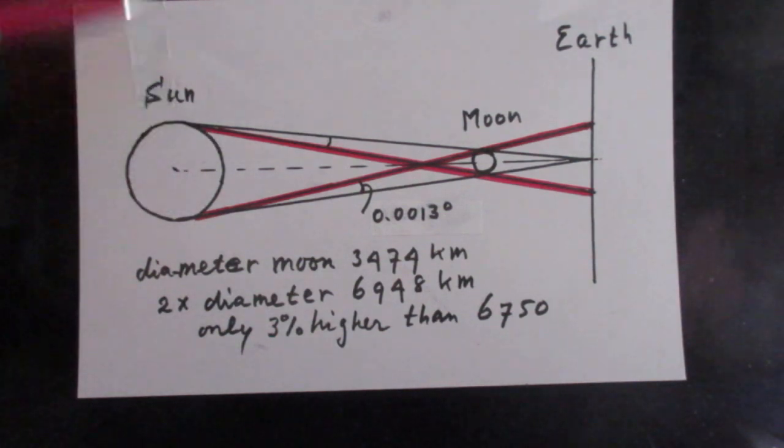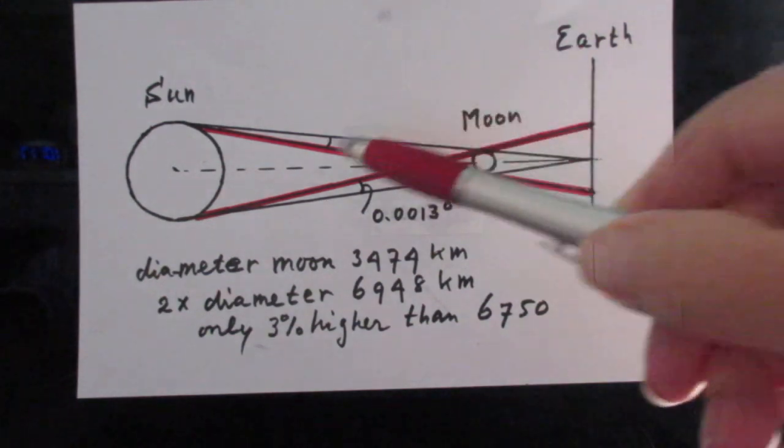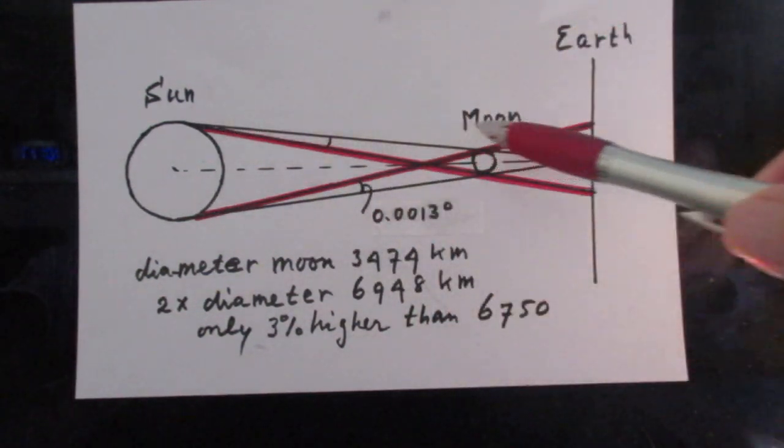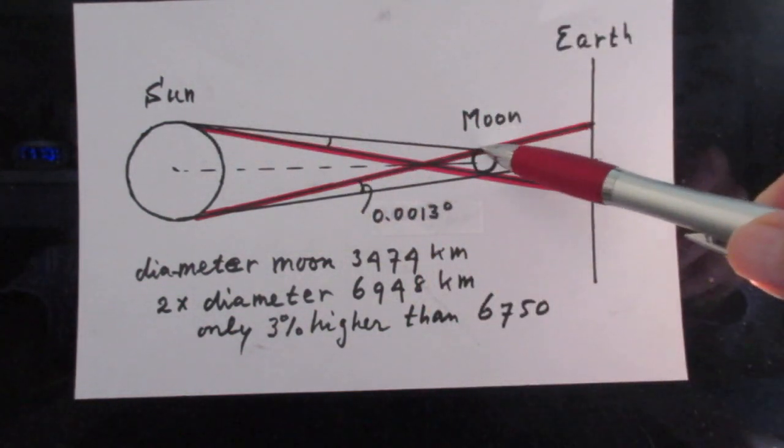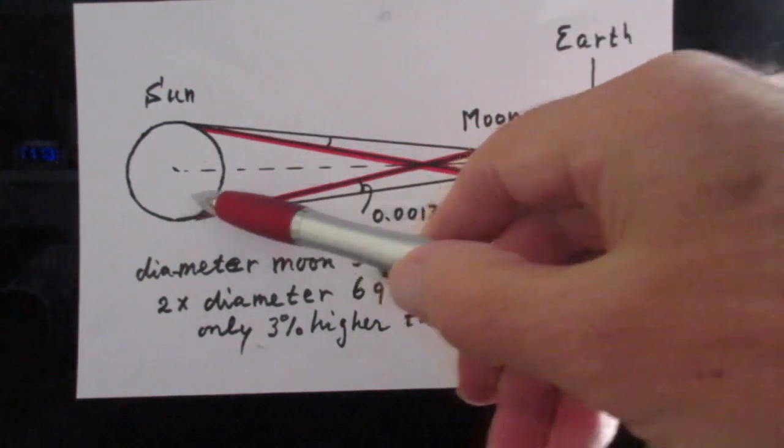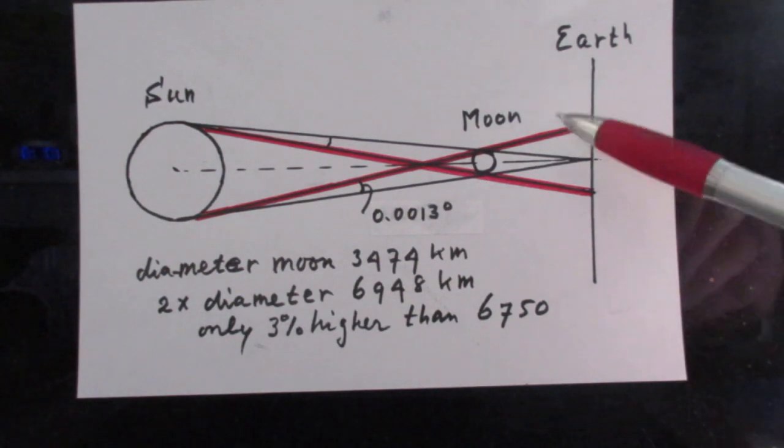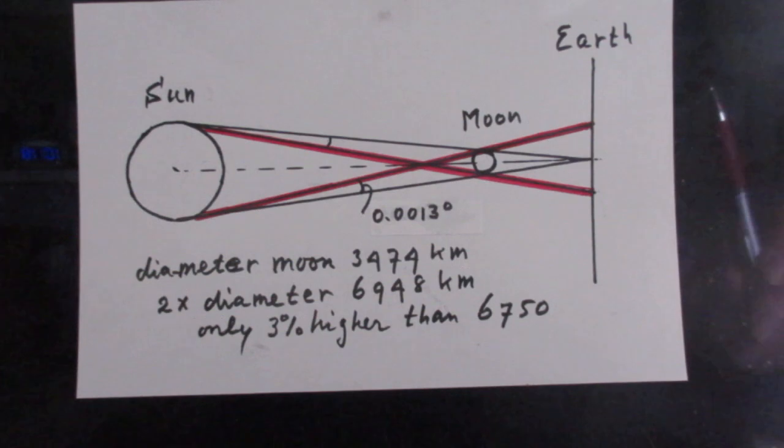So here is the Sun and here is the Moon. The two lines that determine the totality is the one from the top of the Sun to the top of the Moon and the one from the bottom of the Sun to the bottom of the Moon. That's totality. And the penumbra is determined by the two red lines.